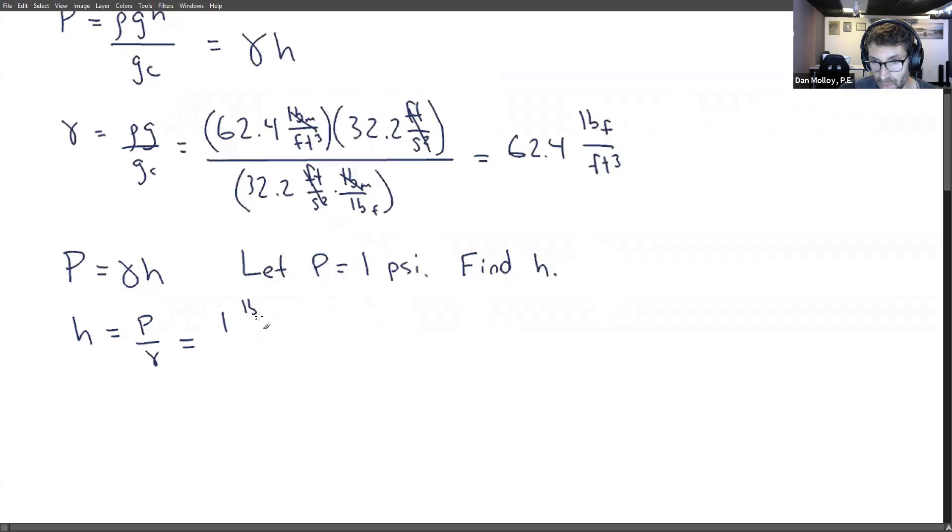Well, we can solve for H. H equals pressure over gamma. And the pressure would be one pound force per inch squared. And then I'm going to convert to feet. So 12 inches over one foot squared. And then we'll divide by the specific weight, which is 62.4 pound force per cubic foot. So we lose pound force. We're going to lose inches squared. We're going to make sure we square that number. And it's going to end up being 144 over 62.4, which is 2.31. And the units, this feet cubed comes up into the top and you have feet squared in the denominator. So it just has units of feet.